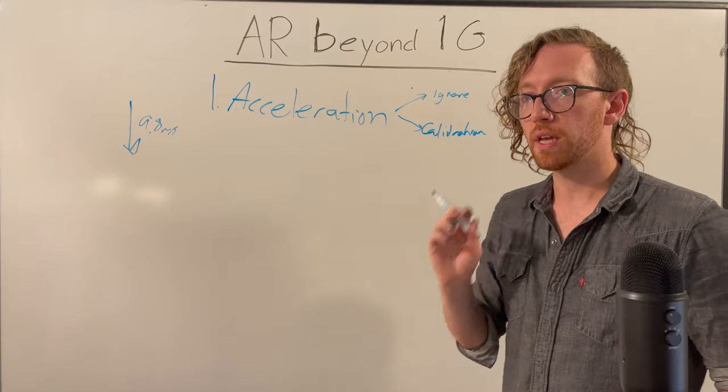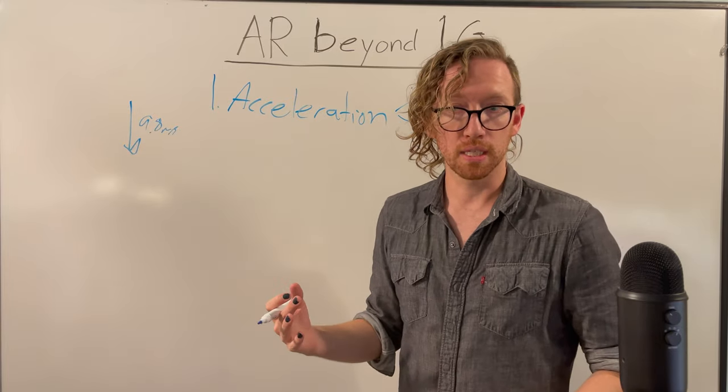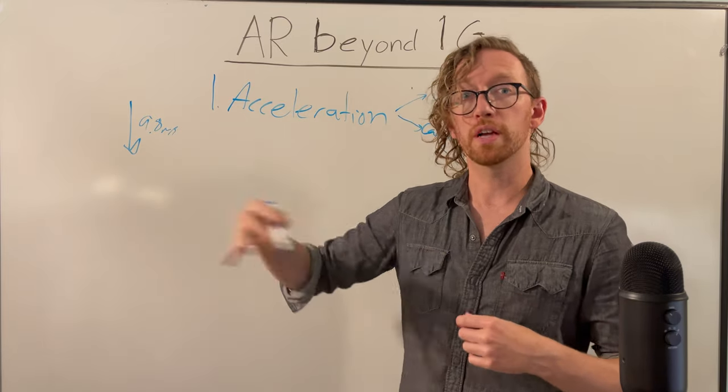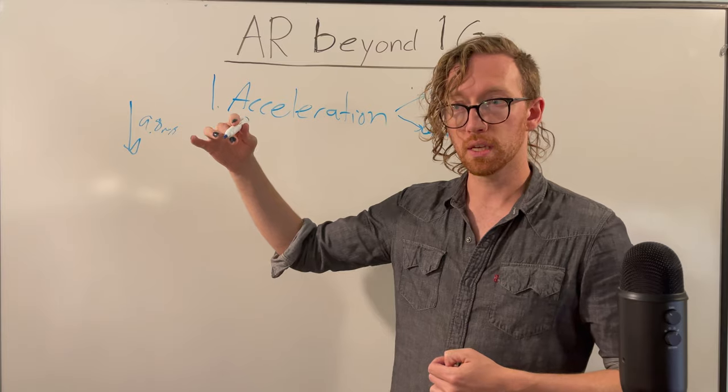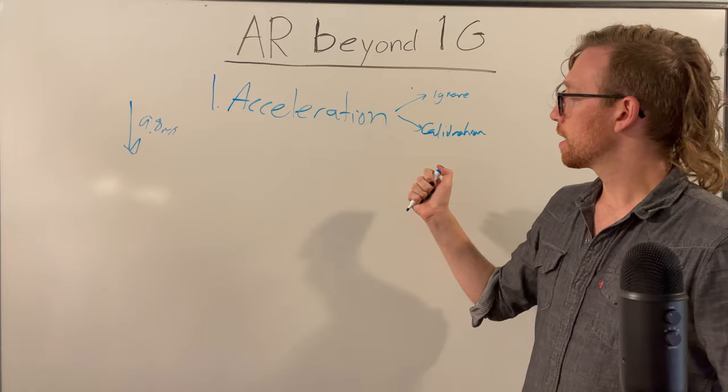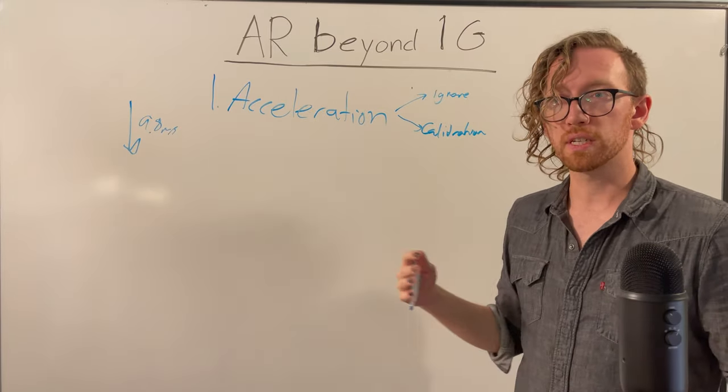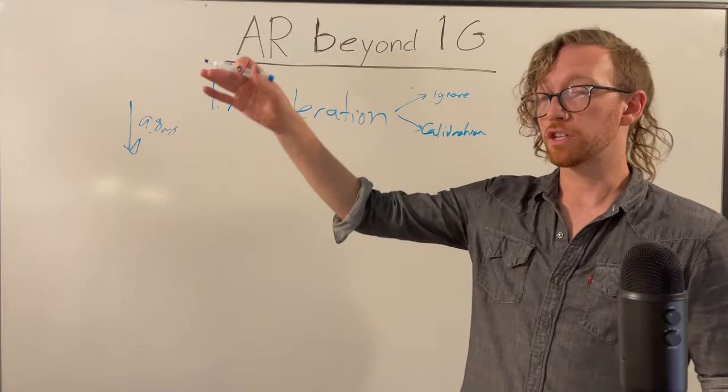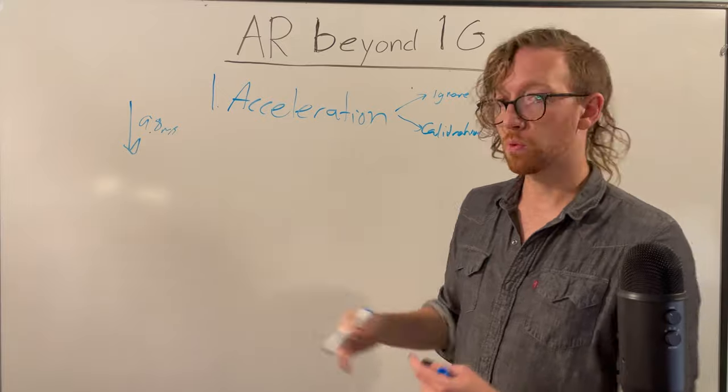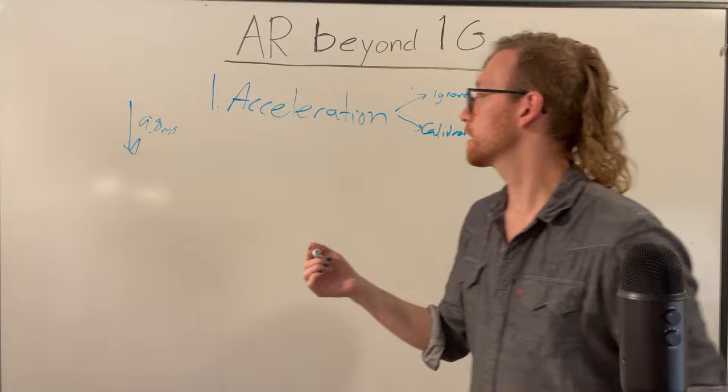Or we can even employ a dynamic calibration where if the acceleration state is changing over time, we can use the SLAM data to gradually correct for, to adjust what the assumption for the IMUs is. We can't take really fast changes. I wouldn't expect that to be able to work in a ship on rocky seas, but in a situation where it's slower changes of the acceleration baseline, that would be very effective.